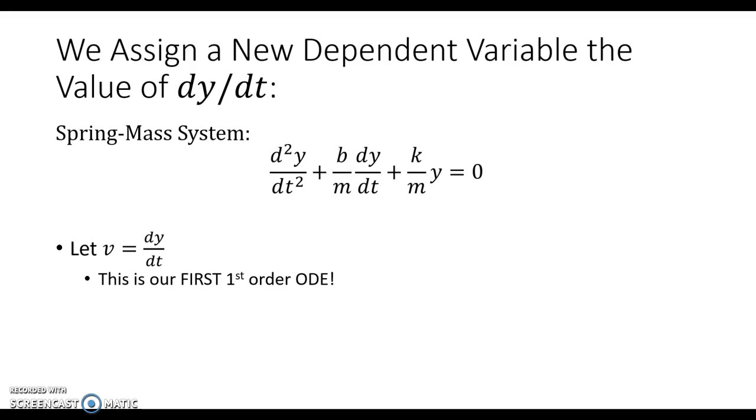So this is our first ODE in the system: v equals dy/dt. So we make the substitution. What do we do with it?